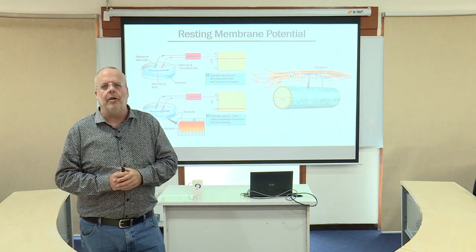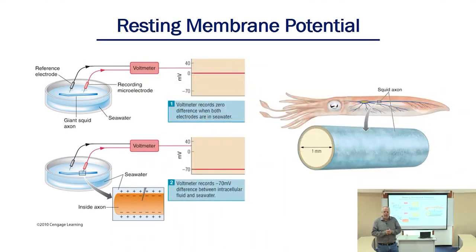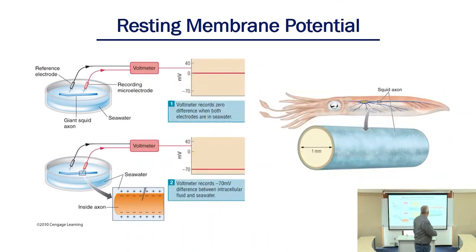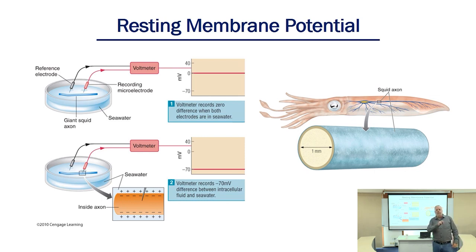So how do they do this? They use something called a voltmeter — it measures voltage. When they take the two leads of the voltmeter and place them both within the fluid, within the Petri dish that contains the neuron segment, there's no difference in electrical electrical charge between those two leads, so we see an output of zero. Not unexpected.